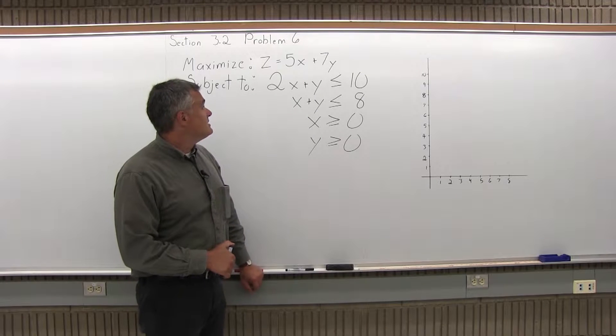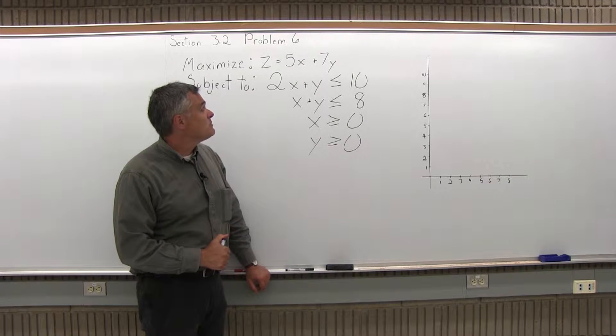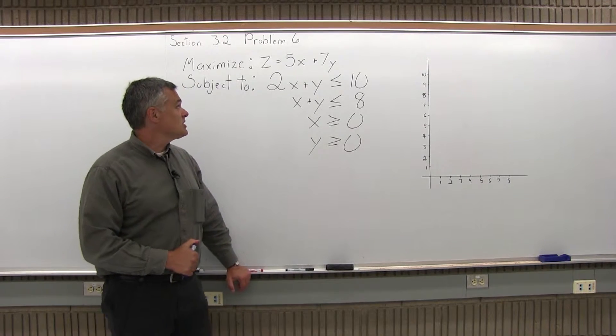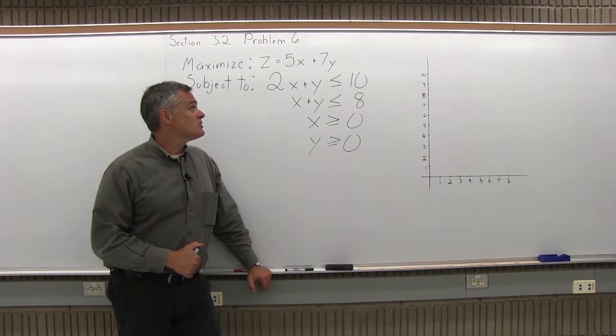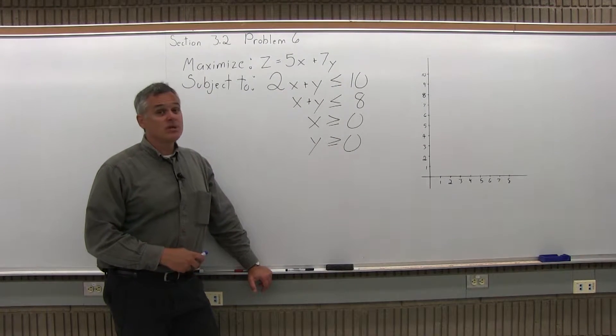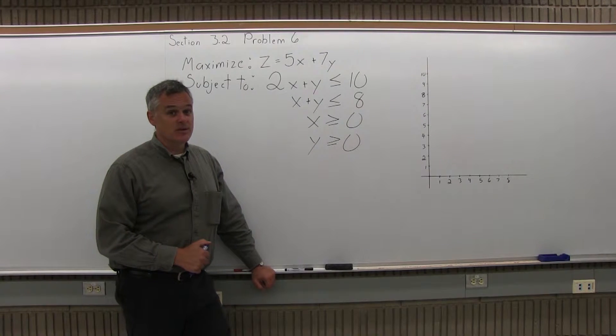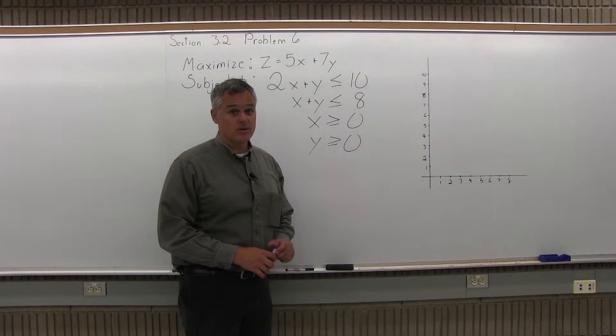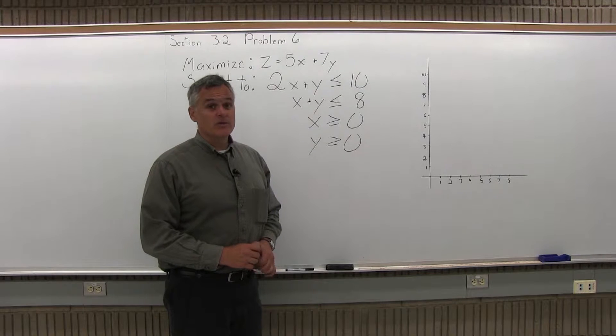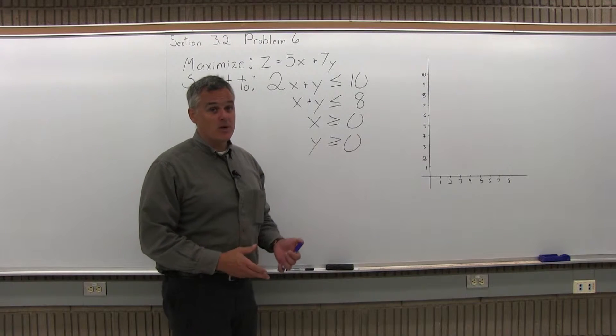It says maximize z equals 5x plus 7y subject to 2x plus y is less than or equal to 10, x plus y is less than or equal to 8, x is greater than or equal to 0, and y is greater than or equal to 0. So like the previous problems in this section, this is a four part process.